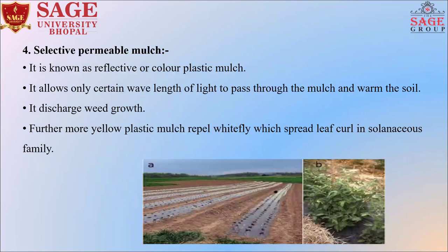The fourth is selective permeable mulch, also known as reflective or colored plastic mulch. It allows only certain wavelengths of light to pass through the mulch and warm the soil. Selective permeable mulch discourages weed growth. Furthermore, yellow plastic mulch repels whitefly, which spreads leaf curl in solanaceous plant families.